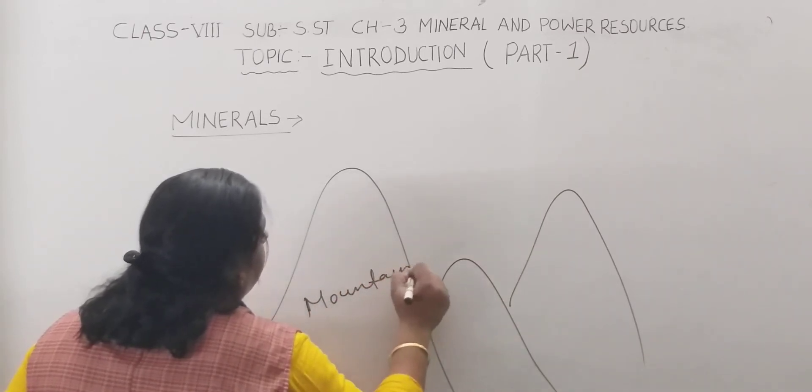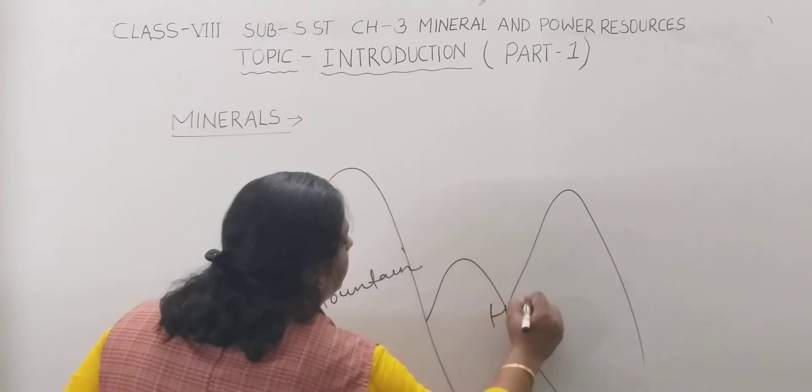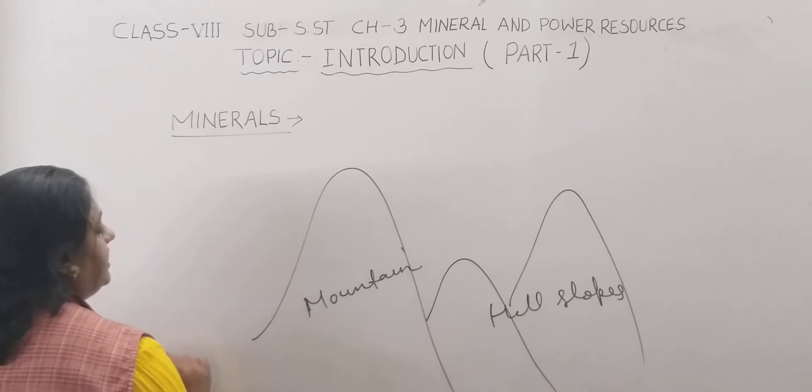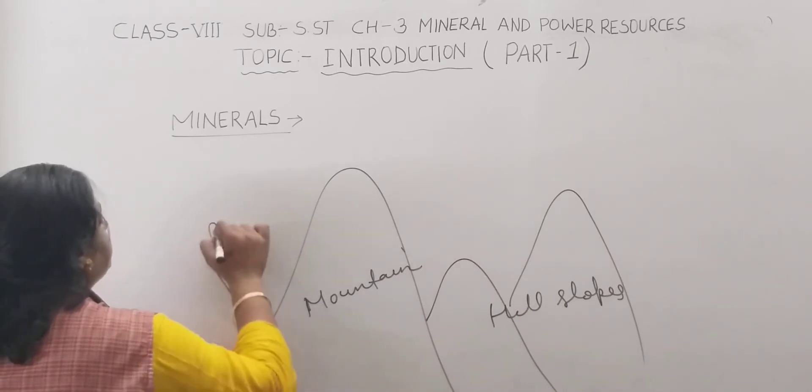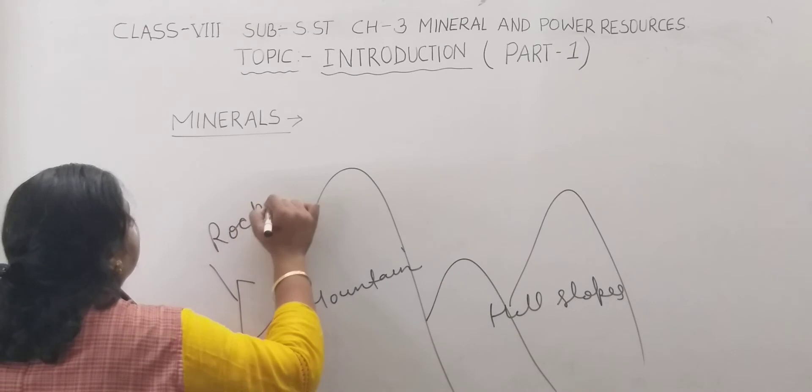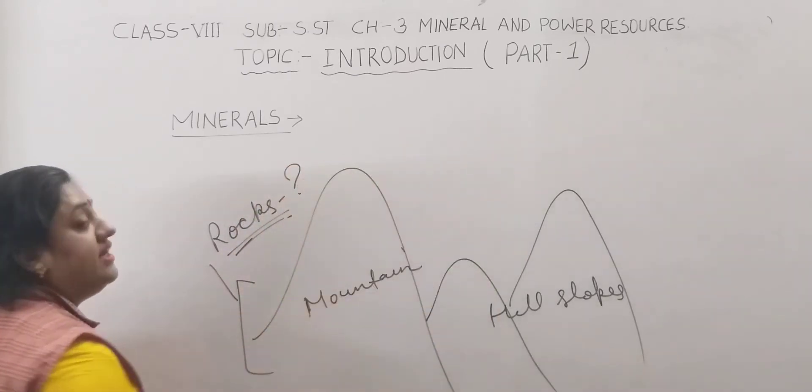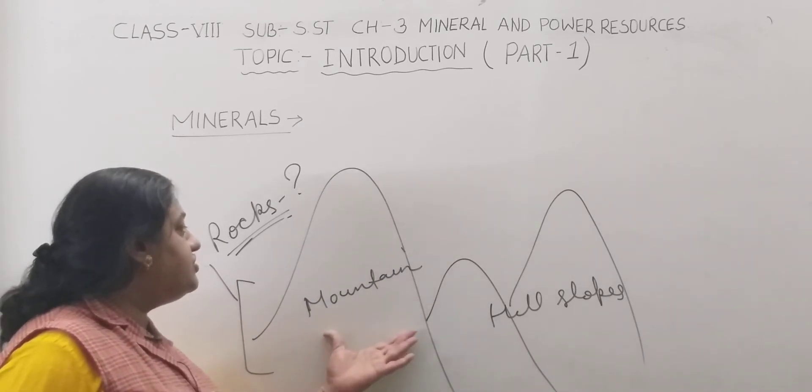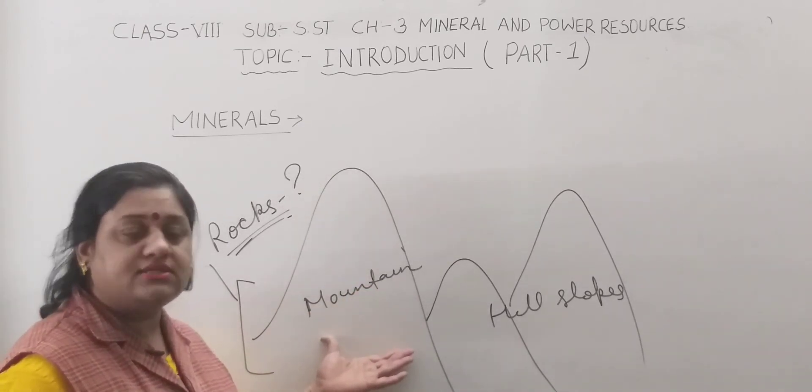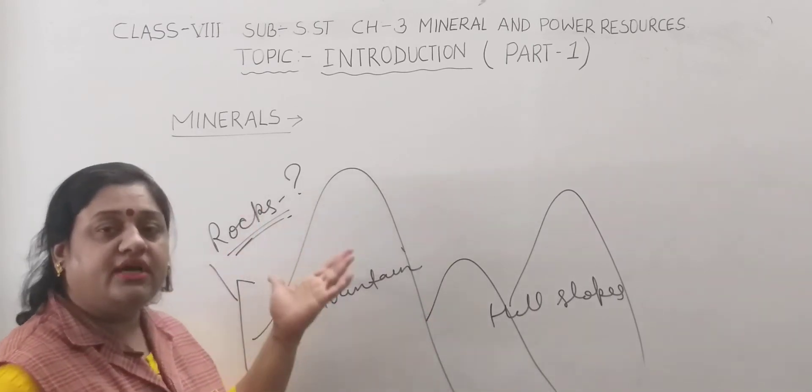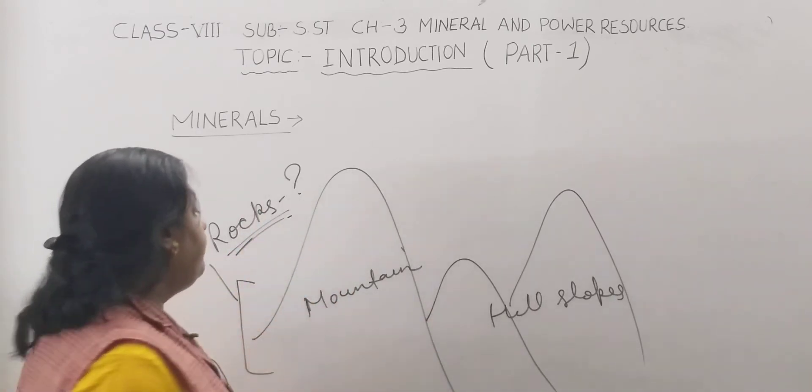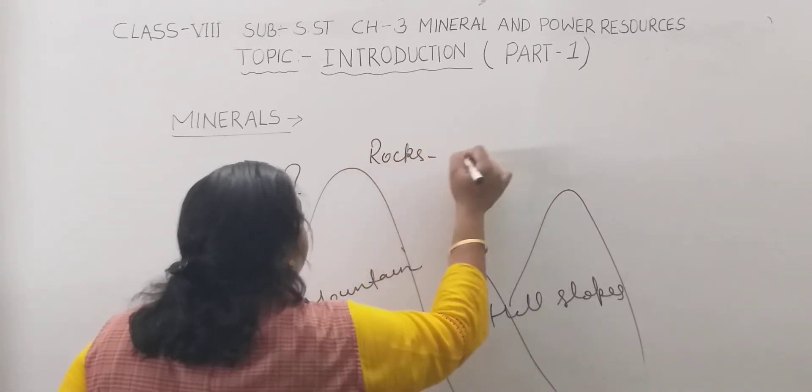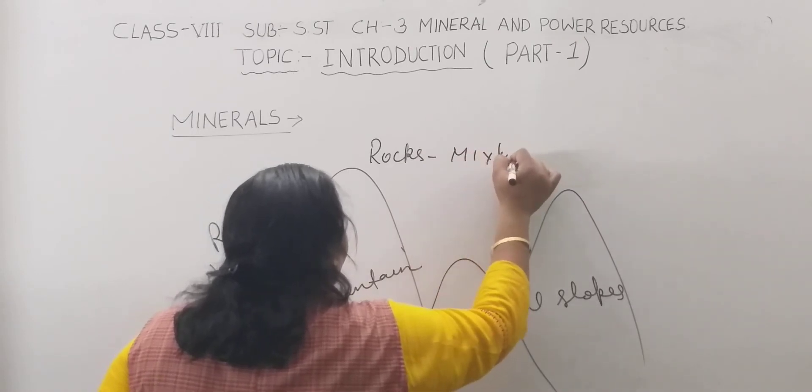This we can call mountain, hill slopes. How are they formed? They are formed through rocks. Now what are rocks? In the sequence of defining what are mountains: combination of different rocks. What are rocks? If we want to define simply what are rocks...